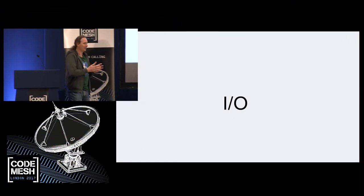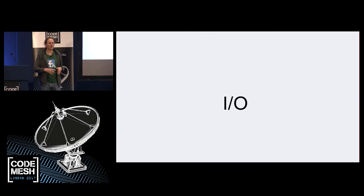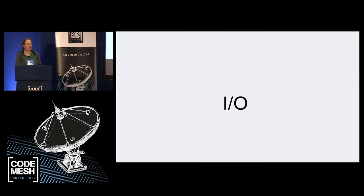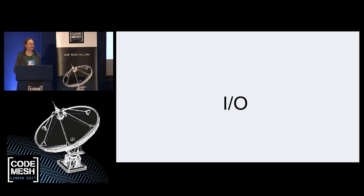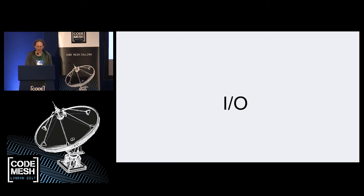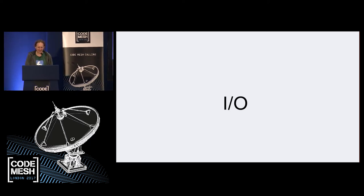My talk is about Haxl. We're going to talk about I/O today mainly. You've heard lots of things about beautiful functional programming during this conference so far, but sooner or later we have to write programs that interact with the real world. And that means doing some kind of I/O. But I/O gets really messy and it has a bunch of problems.